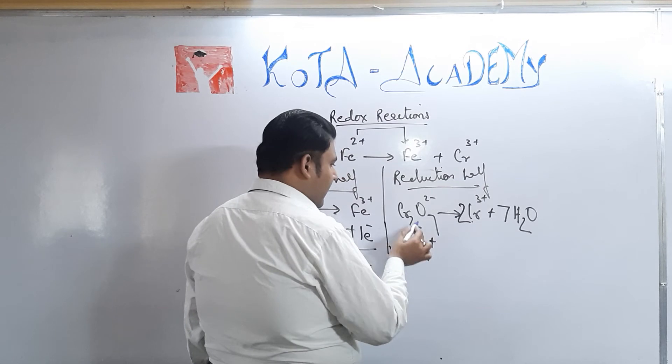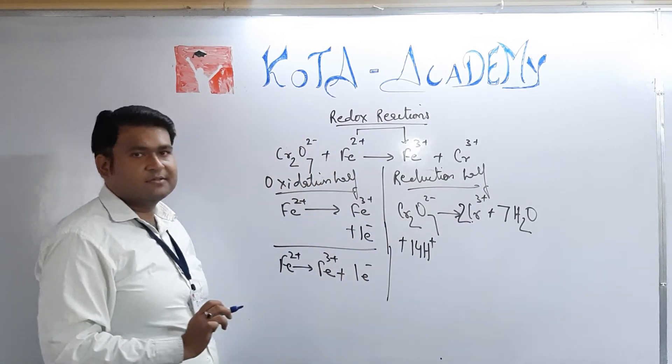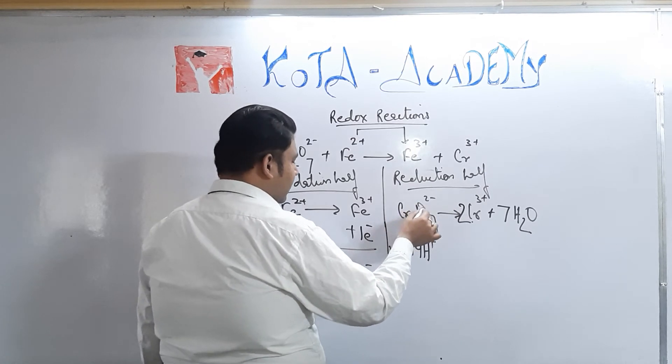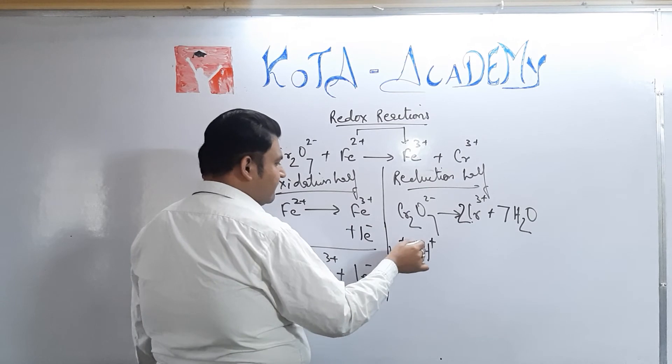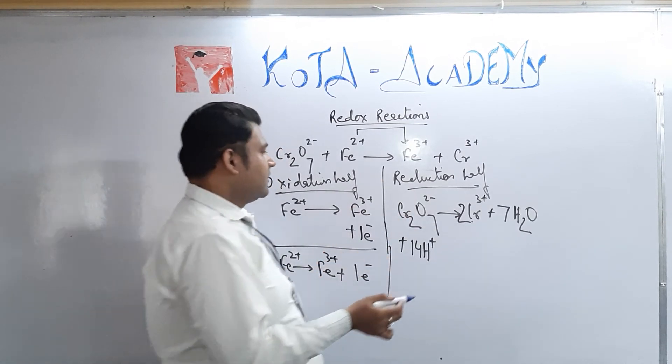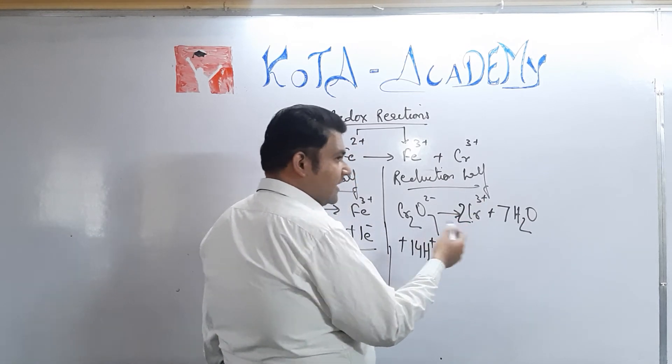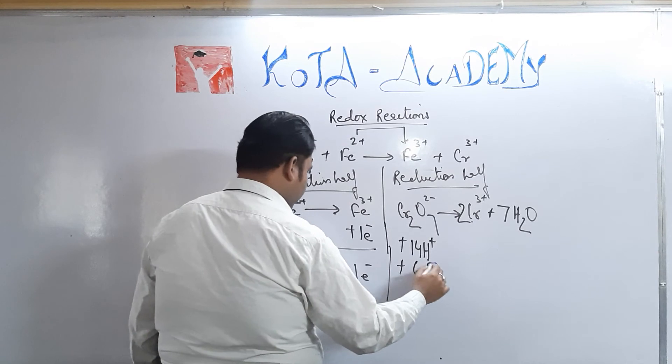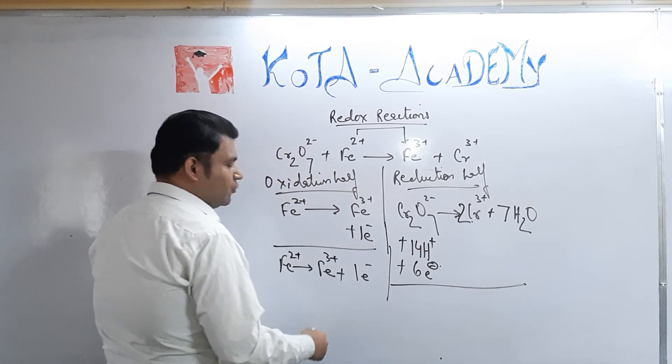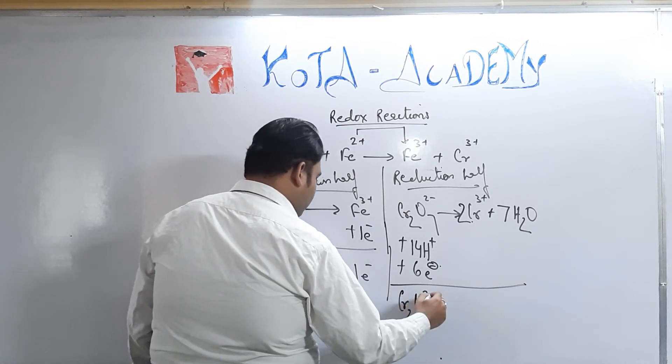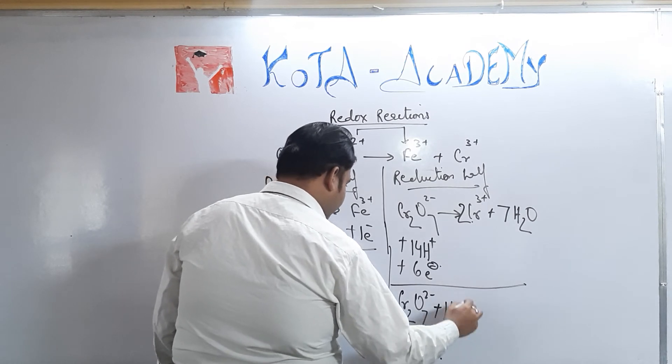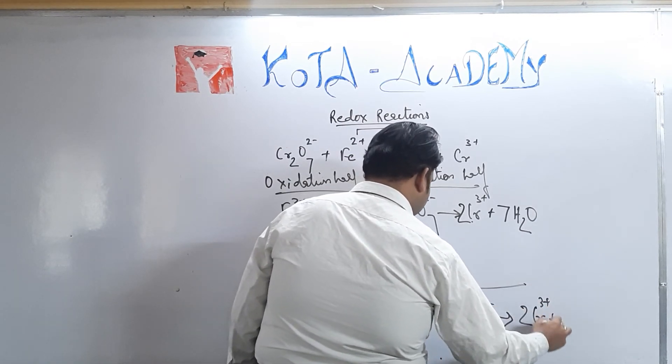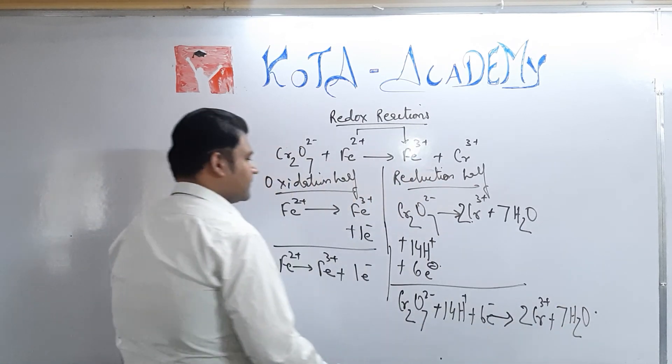So what is happening? At the same time the charge is getting differentiated. So here we can see 14+, 2-. So 12+. And here 6+. So we have to make 14 plus 2, so 12, and here 6+. So we must add up 6 electrons in this. So the final reaction we would be getting: Cr2O7 2- plus 14 H+ plus 6 electrons gives 2Cr3+ plus 7 H2O.